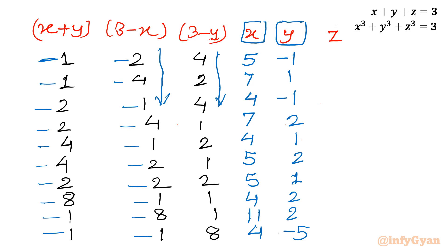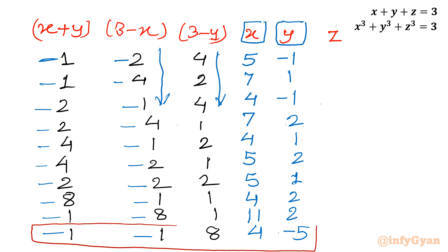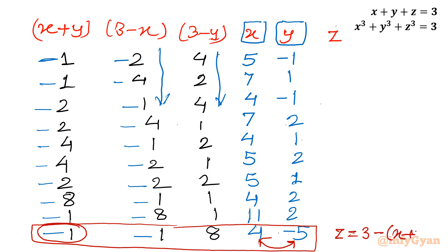Checking the rows, the valid match is the last row of the 8,1,1 group: x=4, y=-5, and x+y = 4+(-5) = -1, which matches the first column value of -1. Then z = 3 minus (x+y) = 3 minus (-1) = 4. So one solution is x=4, y=-5, z=4.